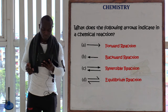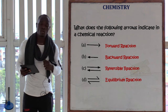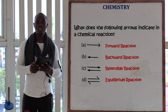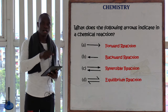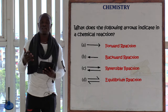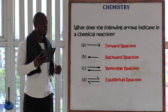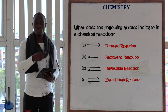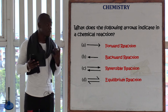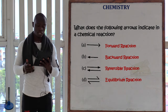Question five asks what the following arrows indicate in a chemical reaction. A single forward arrow indicates a forward reaction. A single backward arrow indicates a backward reaction. Two complete arrows facing opposite directions mean the reaction is reversible. Half arrows pointing in opposite directions mean an equilibrium reaction — you will look at those in more detail when you reach Form 4.